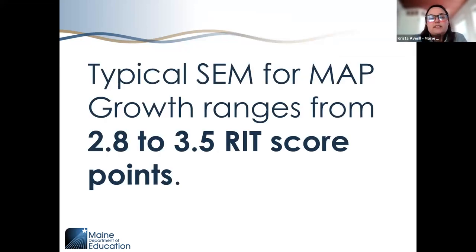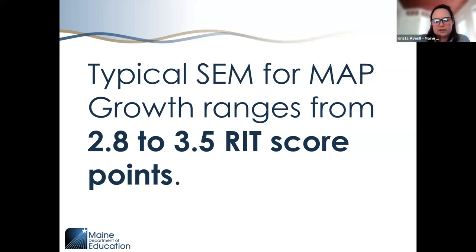The typical standard error of measurement for MAP Growth ranges from 2.8 to 3.5 RIT score points. We'll be using those numbers as the basis of many of our comparisons today.